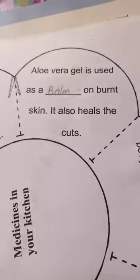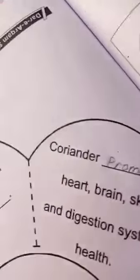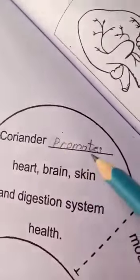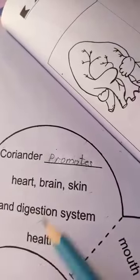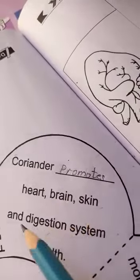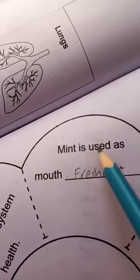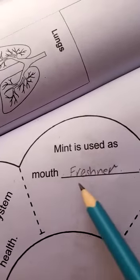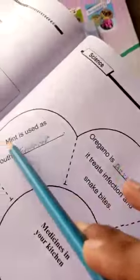Lavender makes your body calm. Coriander promotes heart, brain, skin, and digestive system health. Lastly, mint — it is used as a mouth freshener. Now we have to cut it from here, like a flower shape, as I have seen on the page.